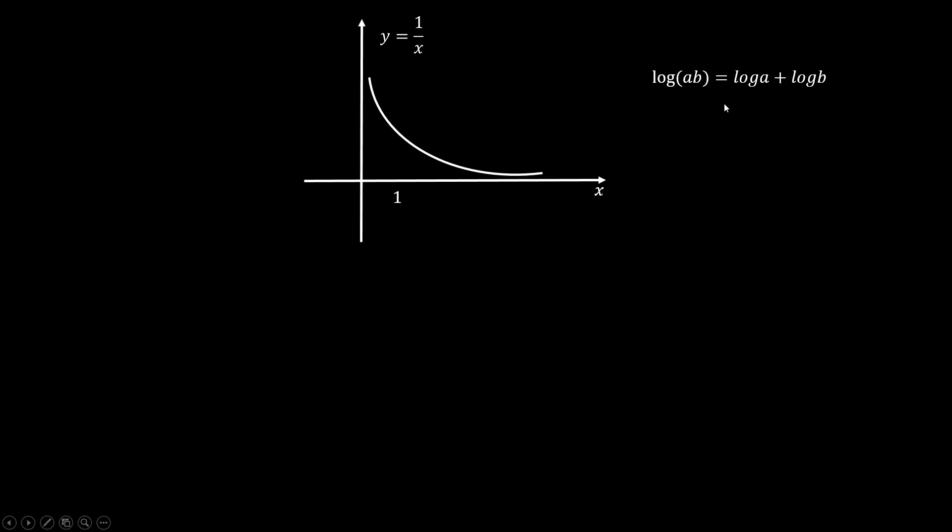For example, log AB equals to log A plus log B. What this is saying is that to change from 1 unit to A units, we need a rate of log A. But if you want B times of that, then you need an extra rate of log B.